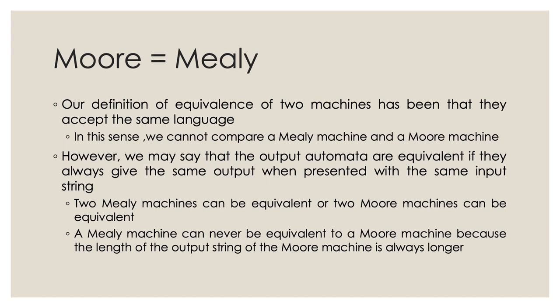Our definition of equivalence of two machines has so far been based on whether they accept or not the same language. If we consider this particular criterion, we cannot consider a Mealy machine and a Moore machine as equivalent, because a Moore machine always prints one extra character compared to the input — the output is always one character longer than the input — whereas a Mealy machine prints exactly the same number of characters as the input.